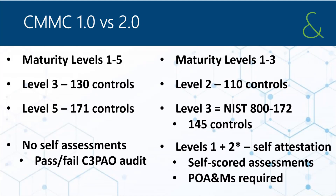Under the 2.0 framework, organizations seeking a level two certification — which is the current level three — some of those organizations will also be allowed to self-assess. The question is: how do we know which organizations seeking level two will be allowed to self-assess and which ones will be required to hire an auditor? The answer is we don't know yet. We're told that if there's an expedited need, there will be no need for an actual audit-based certification for level two. Hopefully more information on that soon.